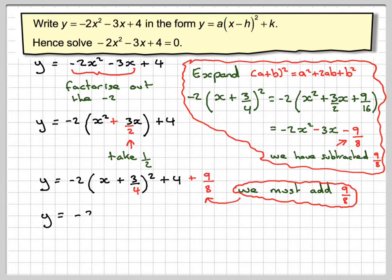So we must now add 9 over 8. So in here I'm now going to add 9 over 8. It's the opposite of what we did here. So this now becomes y equals minus 2 brackets x plus 3 over 4 squared. Common denominator would be 8. So 4 times 8 is 32 over 8 plus 9 over 8. So that will become minus 2 brackets x plus 3 over 4 all squared. 32 plus 9 is 41 over 8.